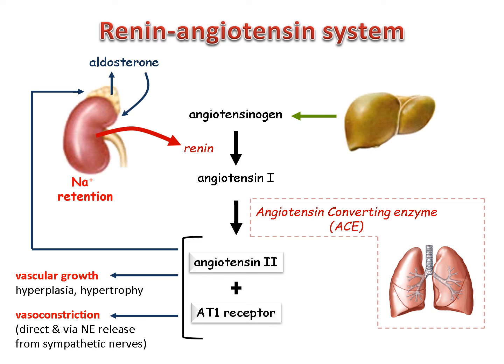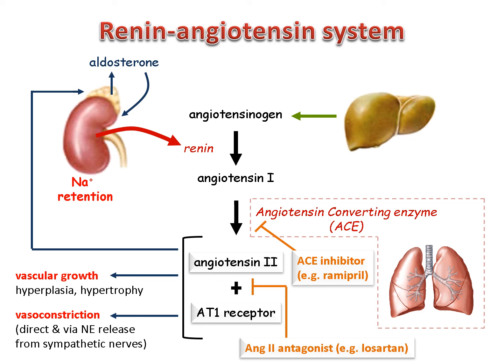Drugs can interfere with this pathway in two places. ACE inhibitors block the enzyme activity of angiotensin-converting enzyme, thereby inhibiting the production of angiotensin-2 and preventing all its downstream effects — one example is Ramipril. The effects of angiotensin-2 can also be prevented by AT1 antagonists such as Losartan, which compete with angiotensin-2 for binding to the receptor. Both ACE inhibitors and angiotensin-2 antagonists are first-line drugs in the treatment of hypertension and are widely used clinically.